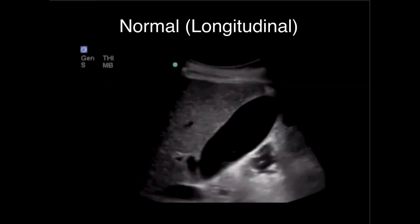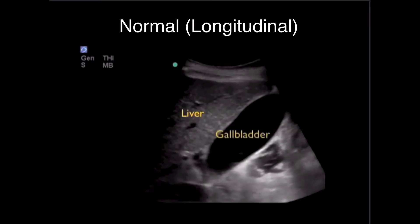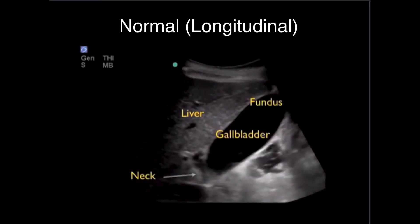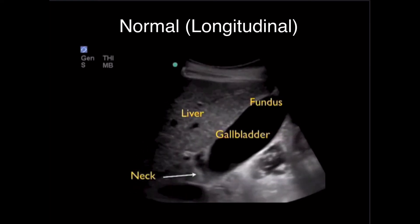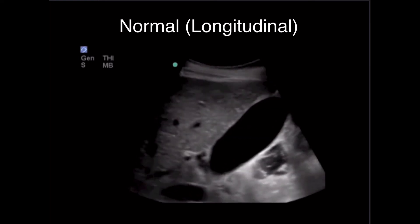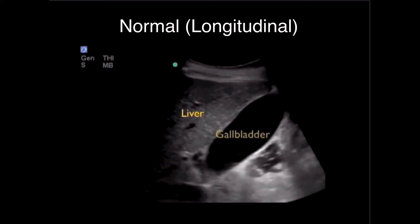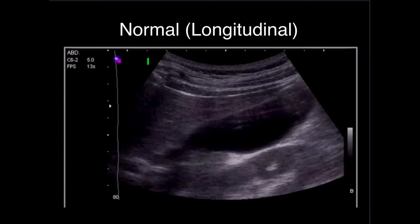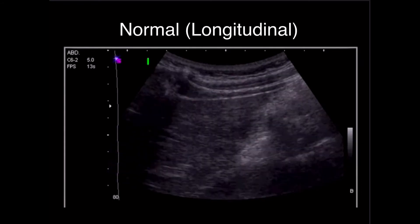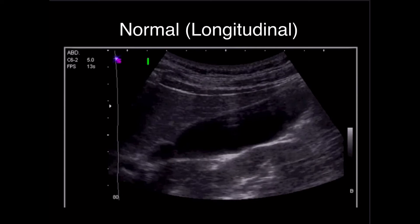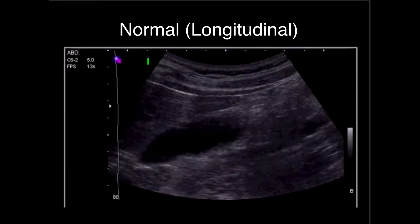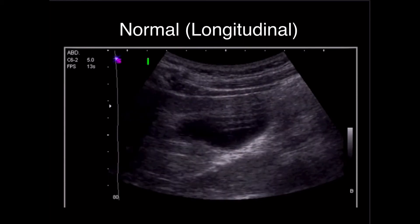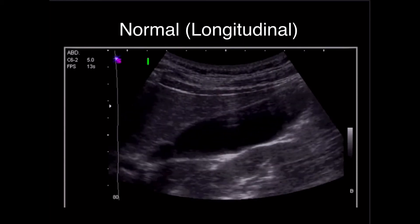Here we have a normal image of the longitudinal view of the gallbladder — a long hypoechoic structure on the screen in the top right, with the fundus on top and the liver on the left side. Here's another normal longitudinal axis of the gallbladder. Remember, just as you see on the screen, you should fan through the entire organ for complete visualization to make sure you're not missing any structure or any abnormal pathology.